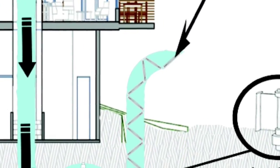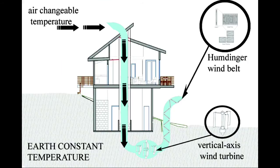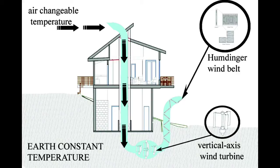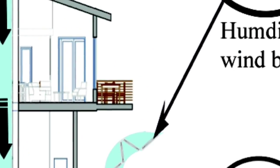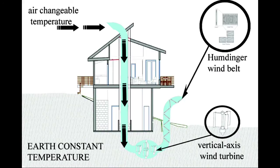VTube is using cutting edge wind turbine and wind power existing technology and knowledge combined with our new and one of a kind VTube technology innovation. Inside the VTube we have two types of wind generators: vertical axis wind generator and Humdinger's wind belt. All of this is connected to behave as one giant wind turbine.